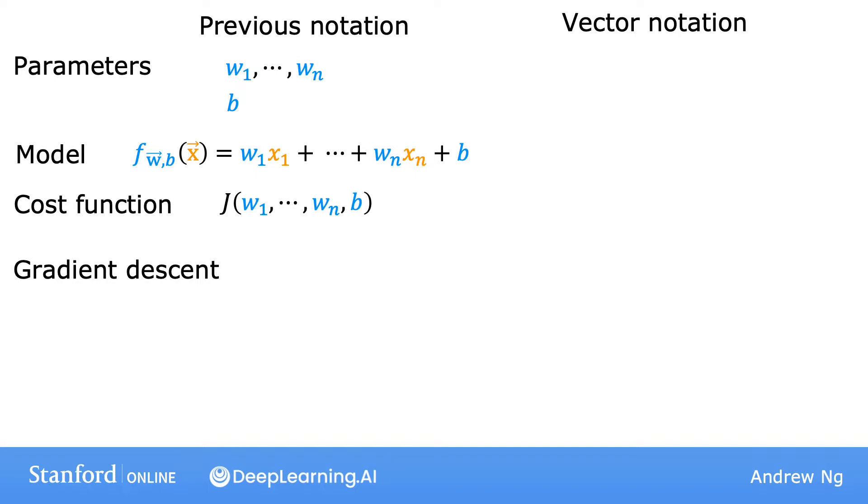that is, separate parameters, let's instead collect all of the w's into a vector w so that now w is a vector of length n.